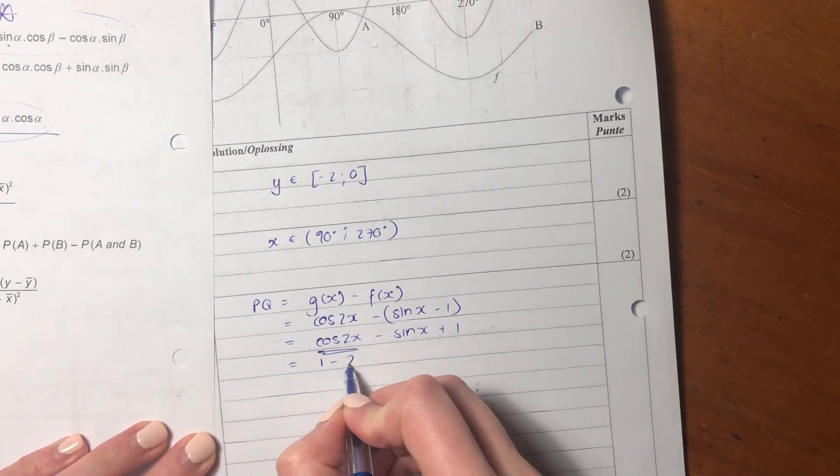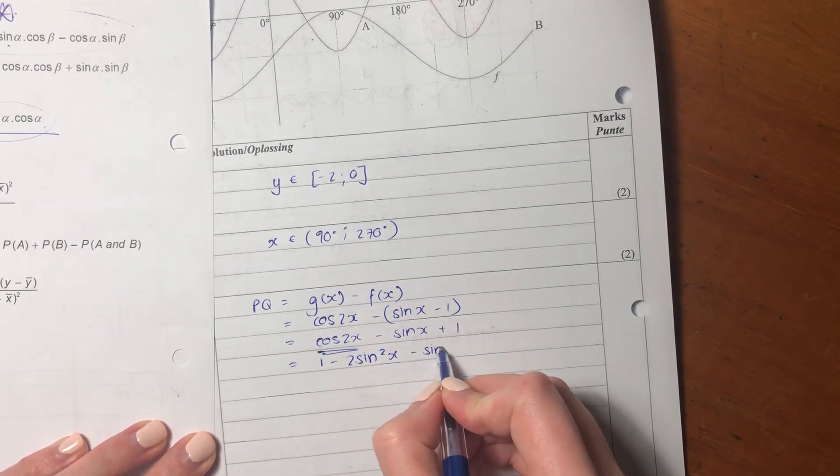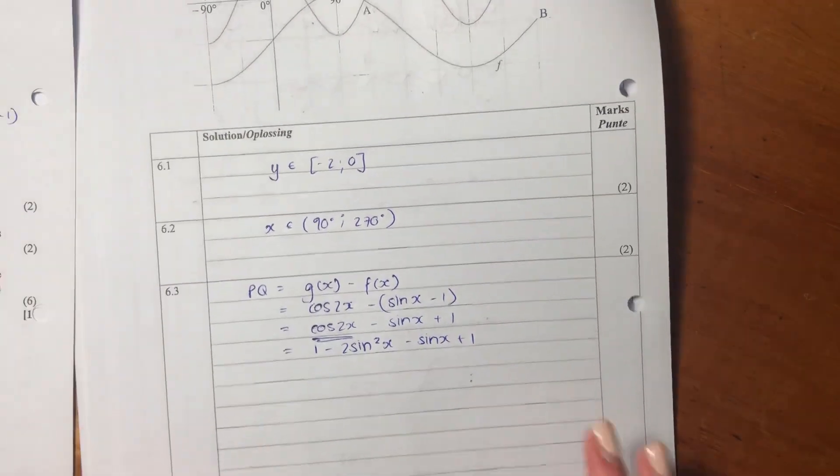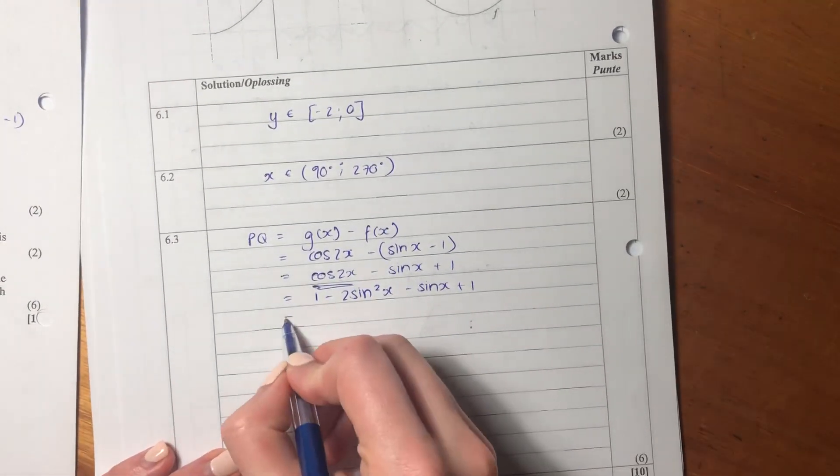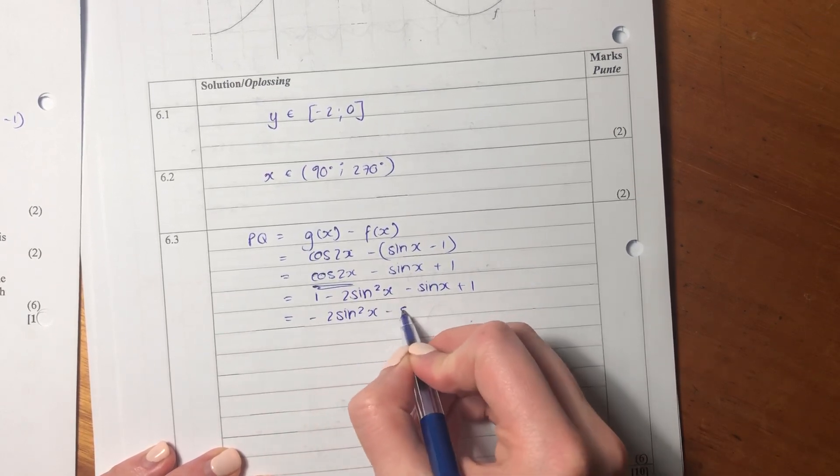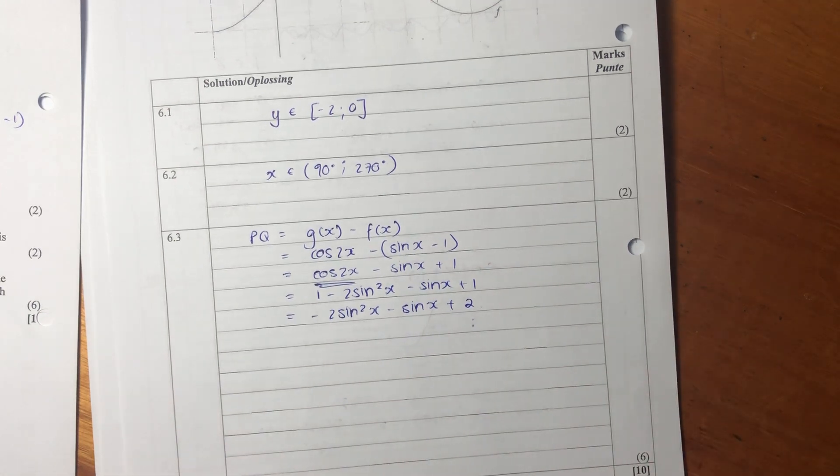So I'm going to say 1 minus 2 sin squared x minus sin x plus 1. Let's now simplify it. Negative 2 sin squared x minus sin x plus 2. Fantastic.